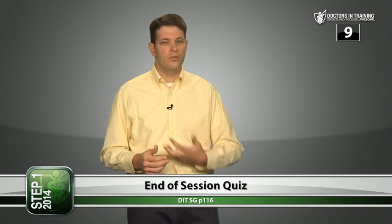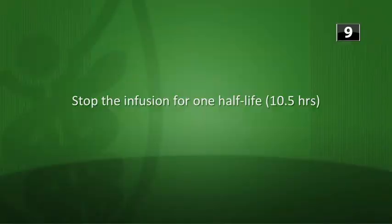Question 3: if the patient begins to show signs of toxicity and the target concentration is decreased to 10 mg/liter, what would you do to reach this new level? You're cutting the target concentration in half, so you stop the infusion for one half-life. That's the meaning of half-life — stop the infusion for one half-life (10.5 hours) and the concentration will decrease by half.